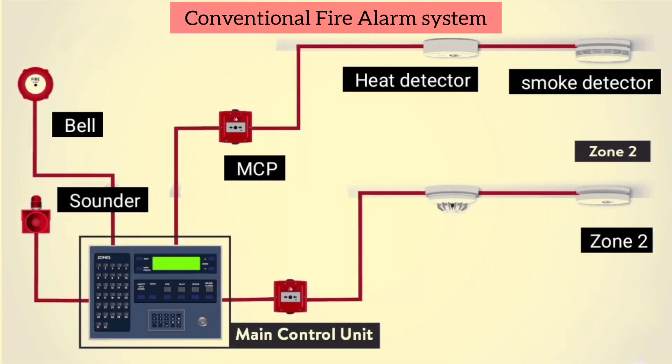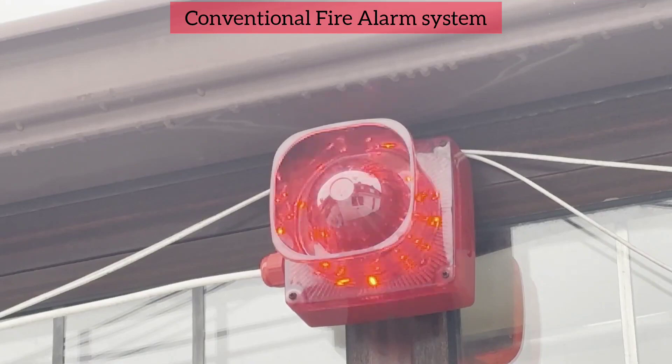Conventional fire alarm system. In a conventional fire alarm system, detectors and call points are wired in zone circuits using class B wiring, and a maximum of 25 to 30 devices can be wired on each zone. Zones simplify locating the cause of a fire alarm. The control panel is wired to a minimum of two sounder circuits, which could contain bells, electronic sounders or other audible fire alarm devices. It is these devices which sound the alarm when triggered.